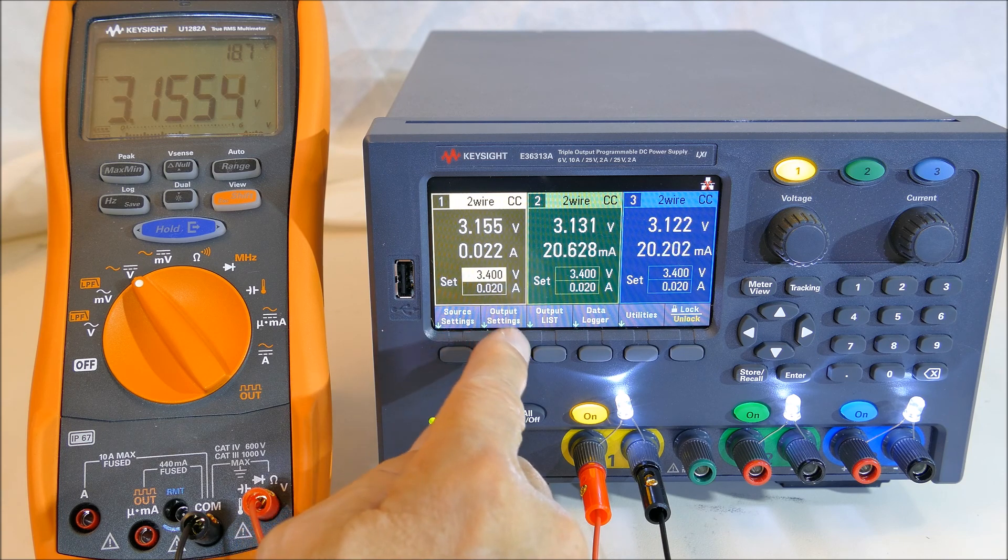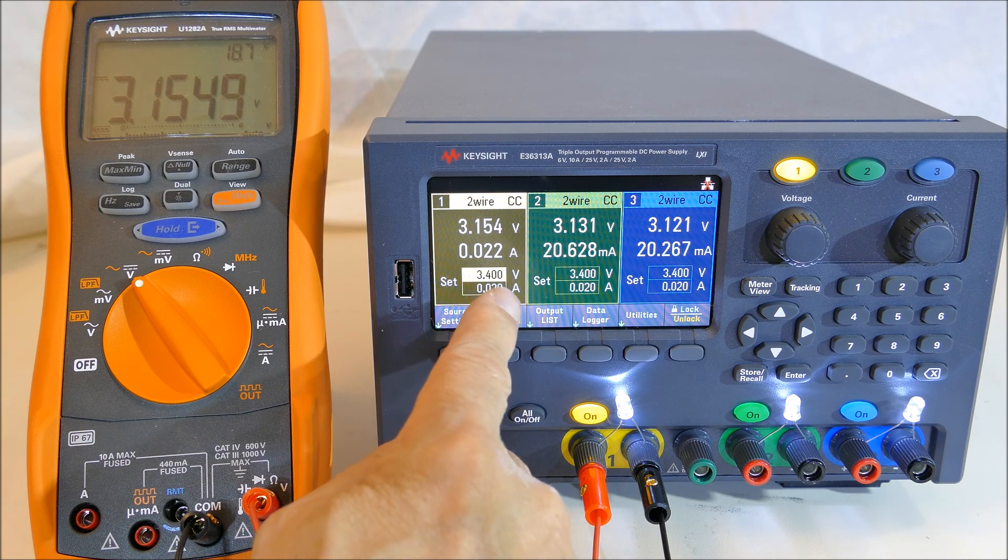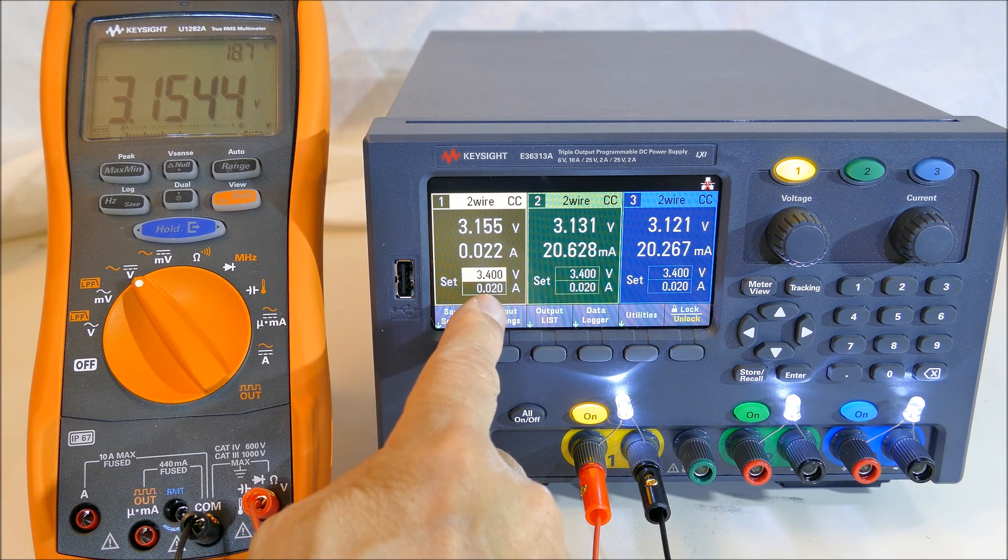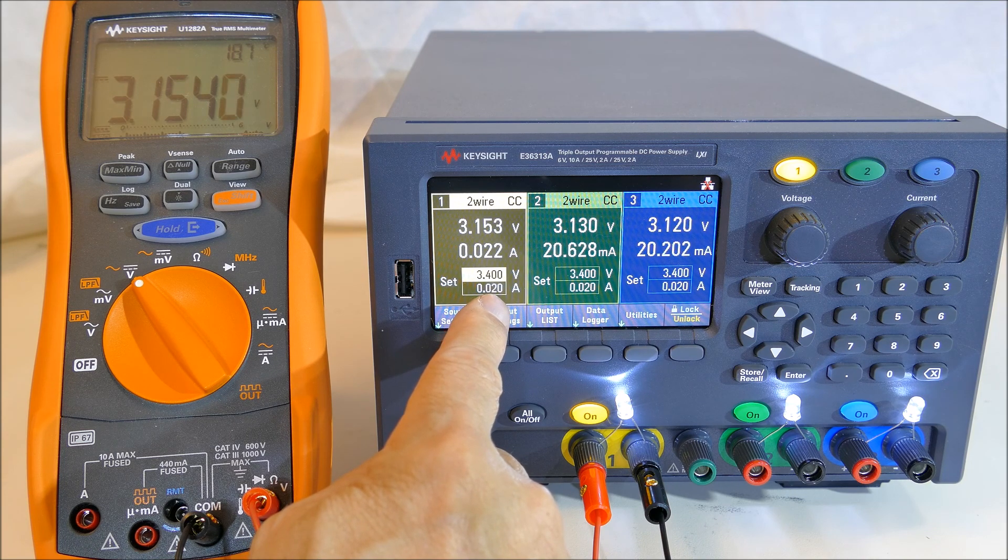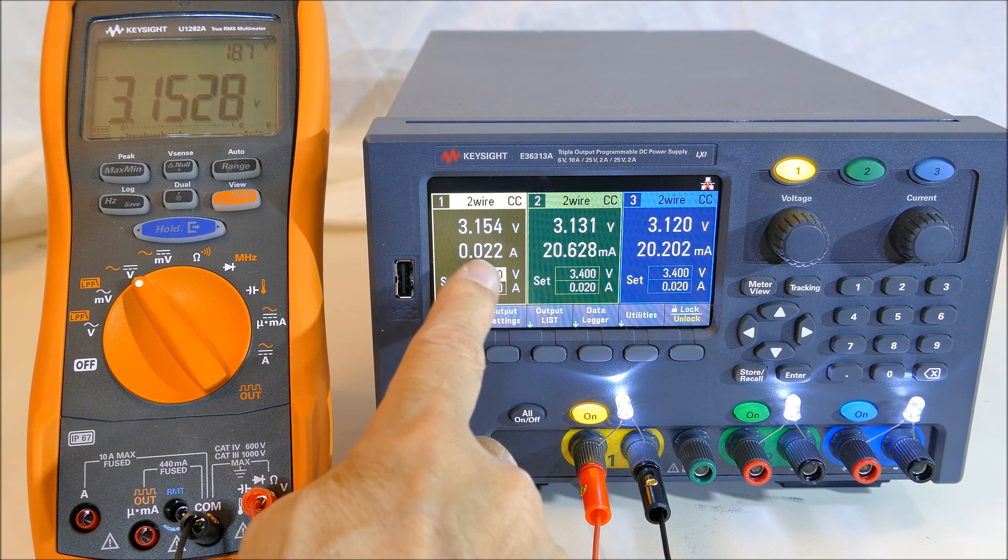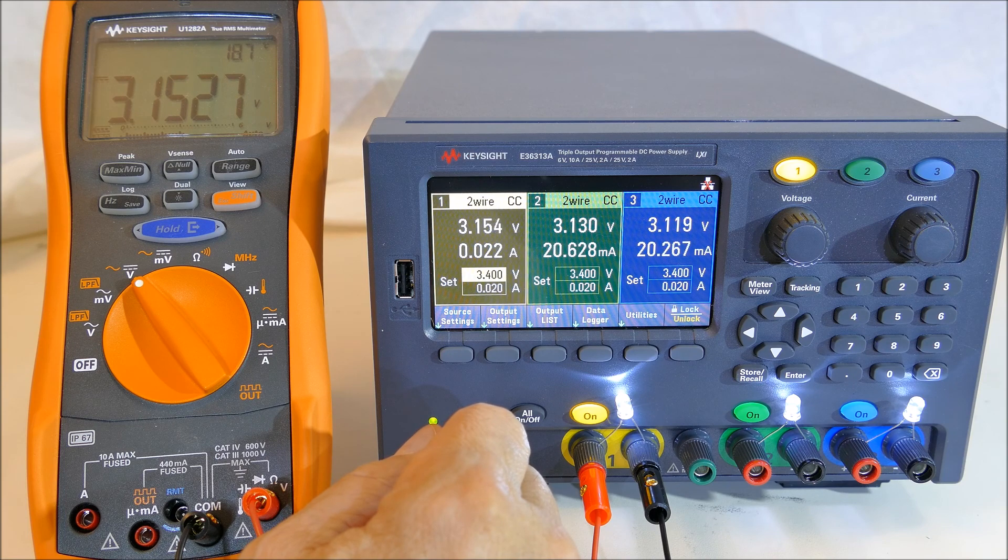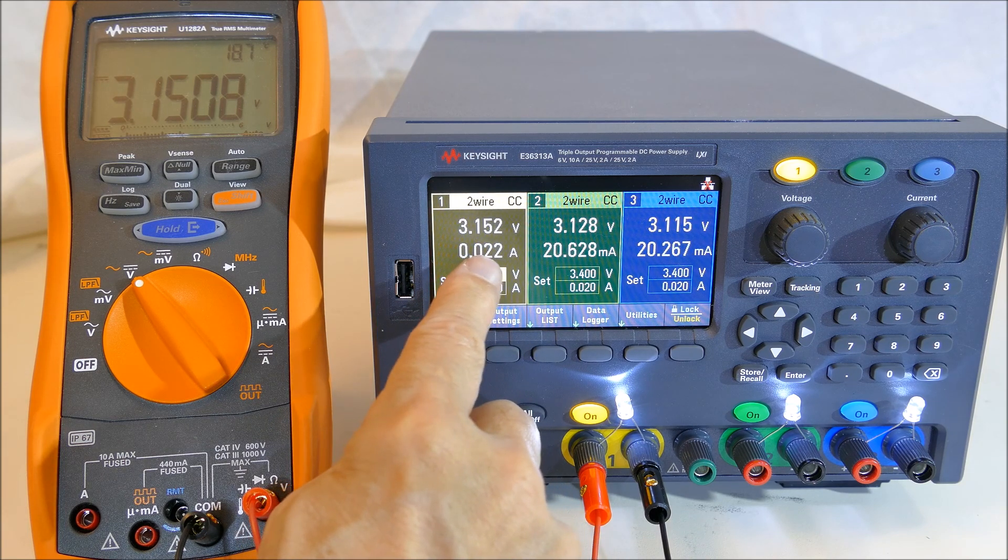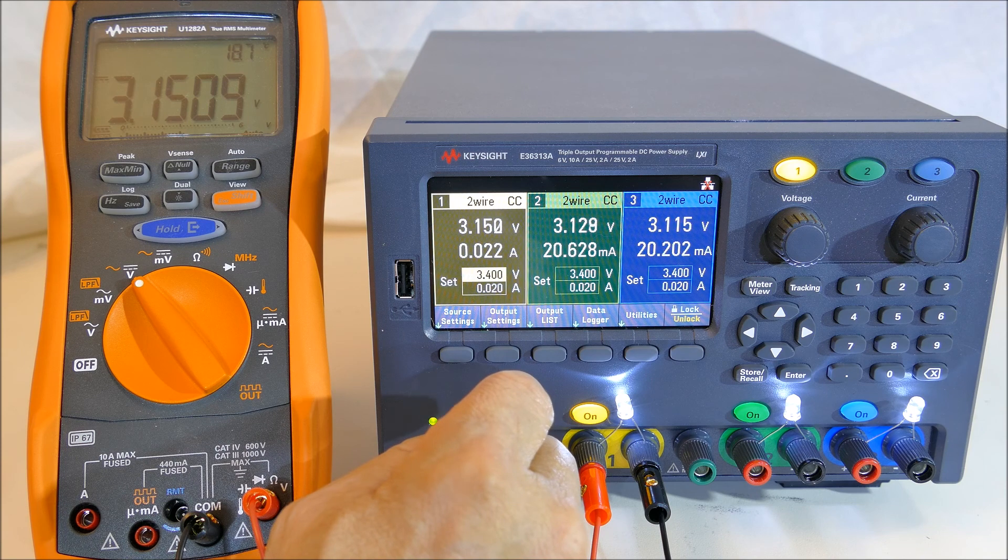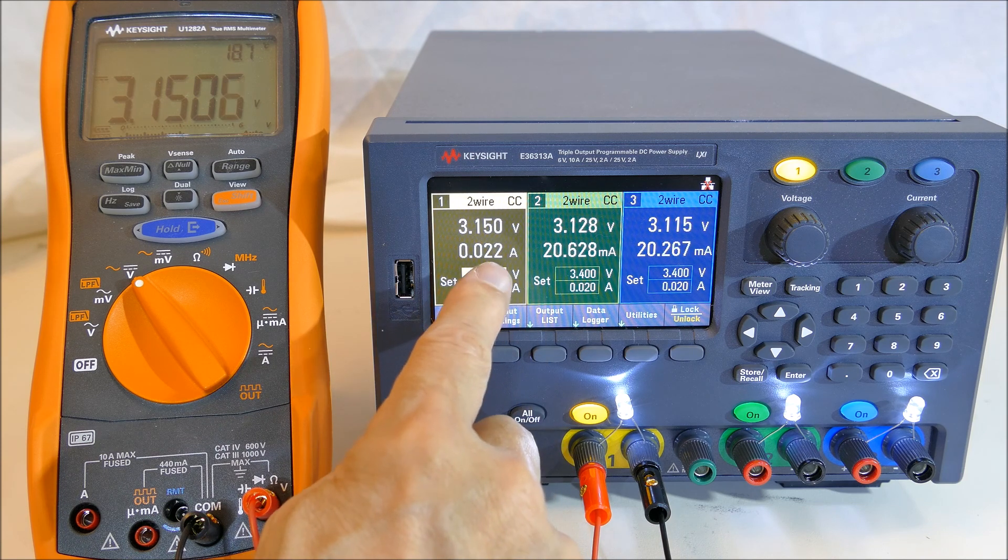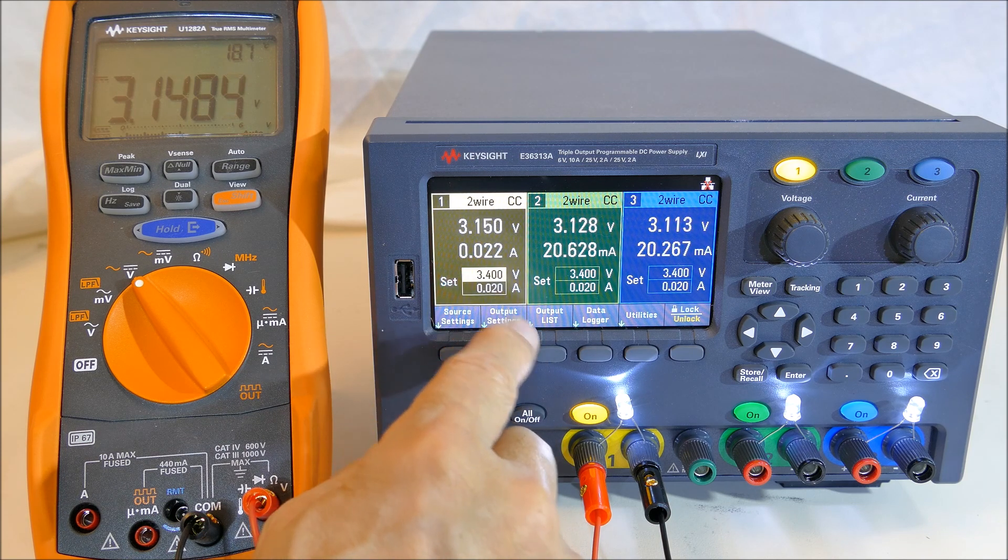If you really wanted to get more accurate, you could simply adjust this set point here to say 18 milliamps and this would come back to 20. You can use this current meter to tell you exactly how much current is coming out. Even though you set it to 20 milliamps, this number is actually more accurate.